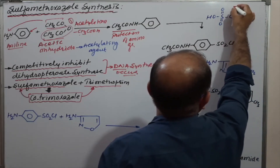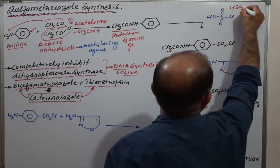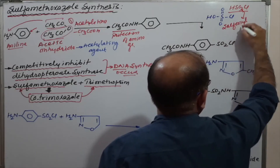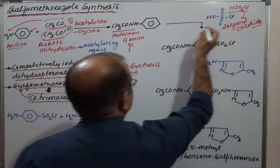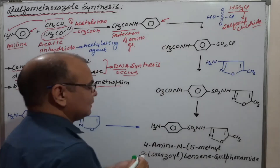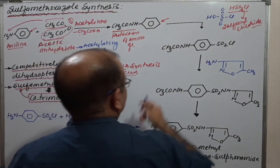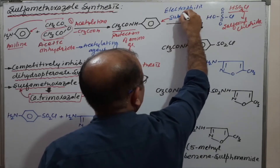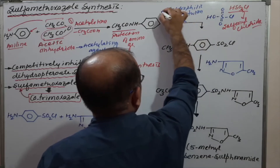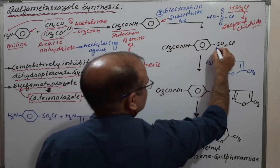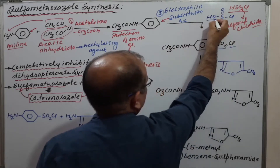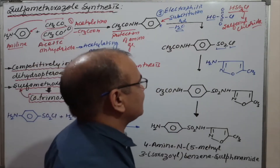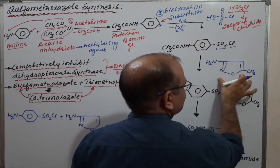In the next stage, sulfonyl chloride (SO₂Cl) is introduced. This is reaction number two — an electrophilic substitution reaction. The SO₂Cl group is attached to the benzene ring with removal of HCl, forming the sulfonyl derivative.